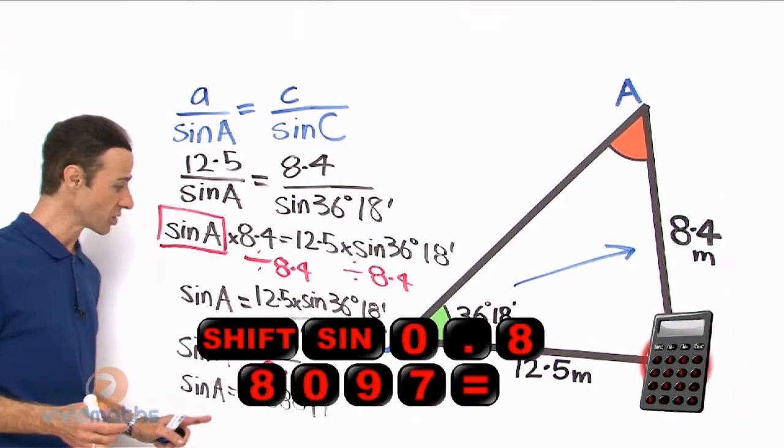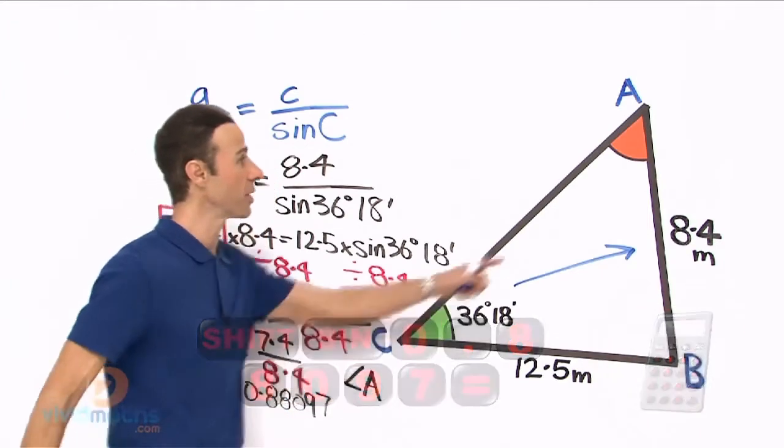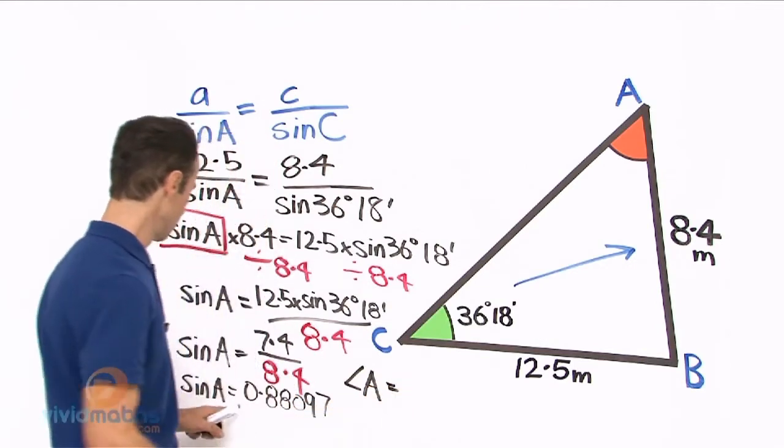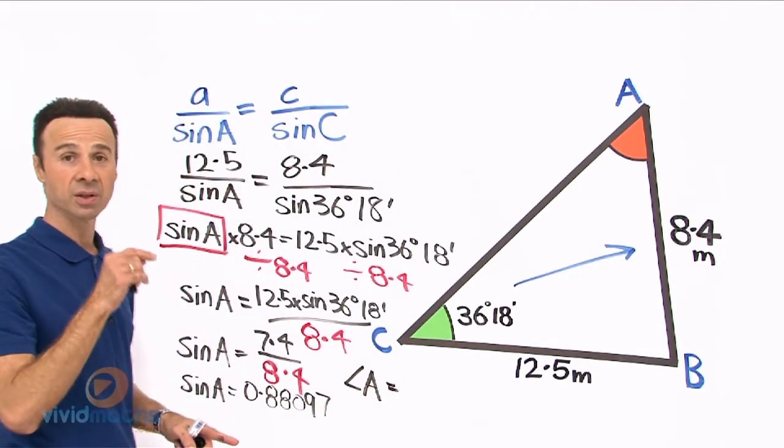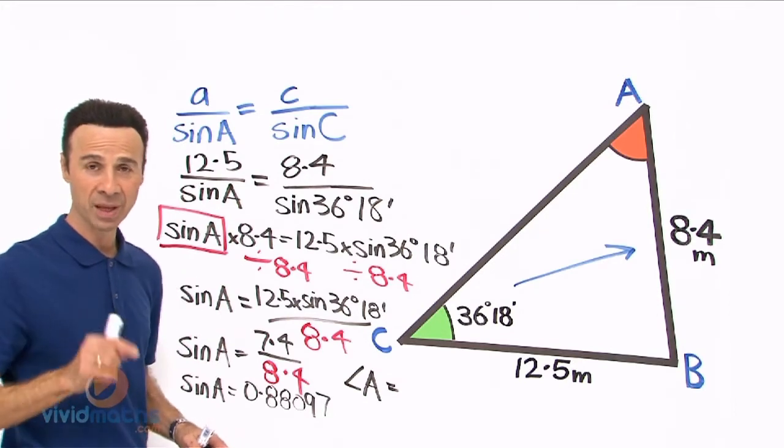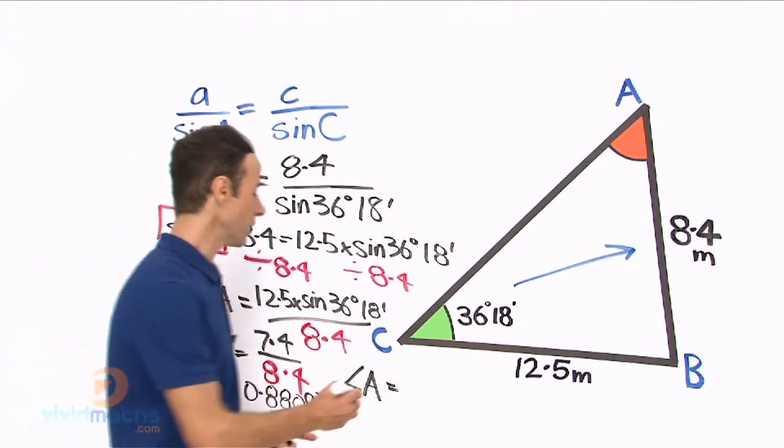That is going to turn out to a single a, so angle a up there in orange, which is what we are looking for, is going to equal, and then press shift degrees minutes seconds or shift DMS depending on your calculator, and the angle a, the final answer will be 54 degrees and 2 minutes.